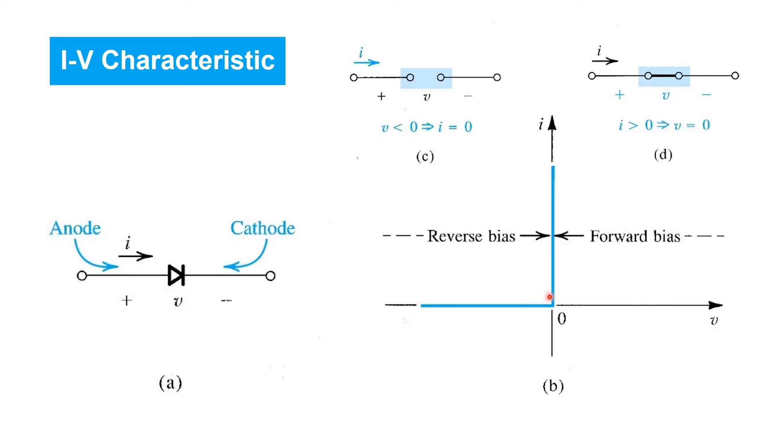Whereas when current's flowing in the positive direction, we see zero voltage drop. We refer to that as forward bias, and as long as we restrict ourselves to that region of the IV characteristic, the diode's behaving like a short circuit. These are idealized characteristics of the diode. We'll talk about more accurate models later.